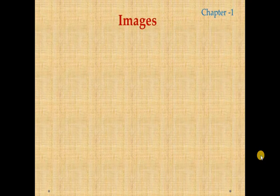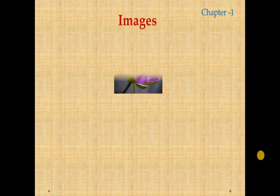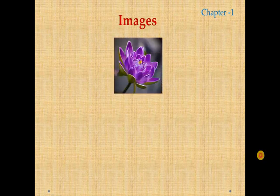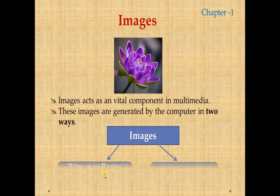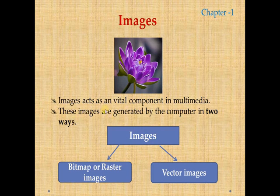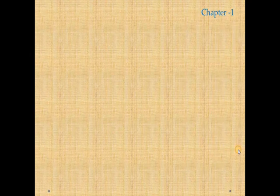The next component of multimedia is images — a still image. Images act as a vital component in multimedia. There are two types: one is bitmap or raster images, and another one is vector images. So what's the difference between the two?